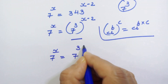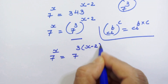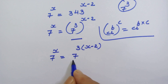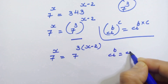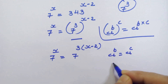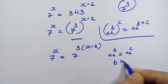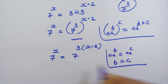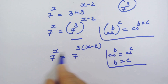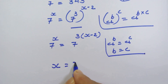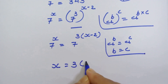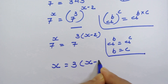Now we have the same base on both sides. If a raised to b is equal to a raised to c, then we can equate the exponents: b is equal to c. So here we equate the exponents: x is equal to 3 into (x minus 2).